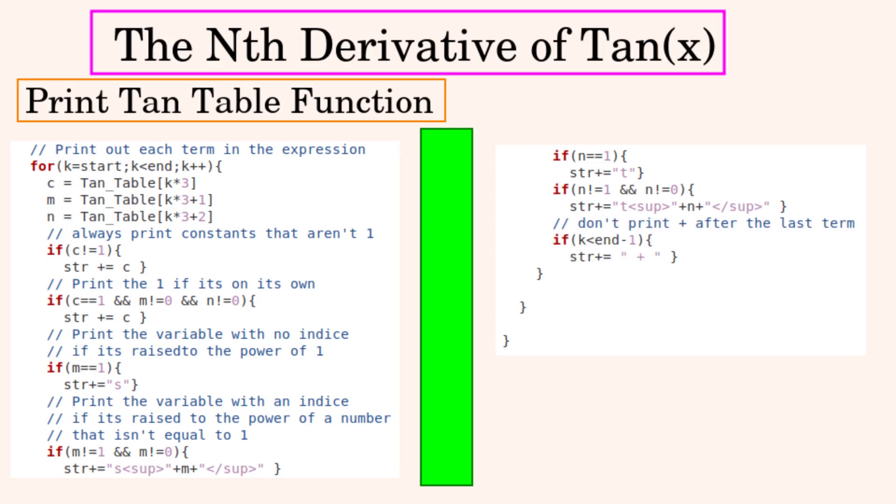So these are the plus signs that are written between the terms. The condition in the if statement means that it won't write out the plus sign after the last term. So here's where we'll write out this expression with a carriage return or new line after it.